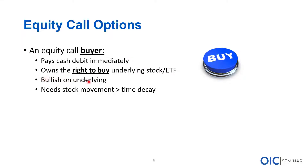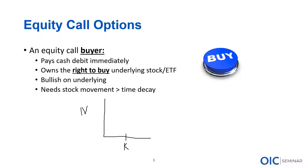We'll also cover volatility skew, exercise and assignment — buyers have to know about exercise, sellers need to know about assignment, particularly pin risk or after-assignment risk. You certainly don't want to end up with a position that you don't want to have and risk that you never intended to take. Starting at the ground floor with basics — a call buyer is paying cash immediately out of their account and in exchange they now own an option which has value as an asset.